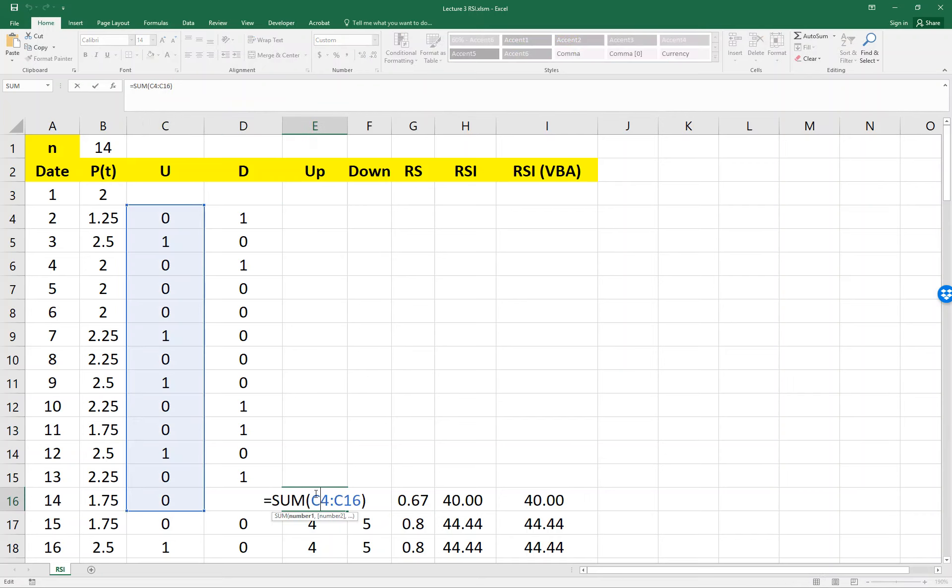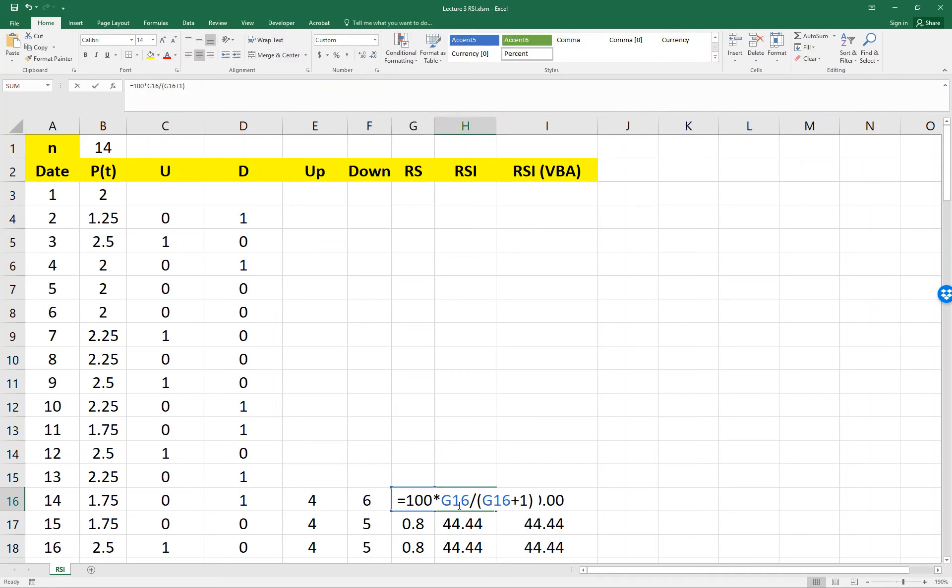And Up will be the past 14 days, because this example uses 14 days. And Down will be the past 14 days down. And then RS and RSI will be just normalized based on the formula.